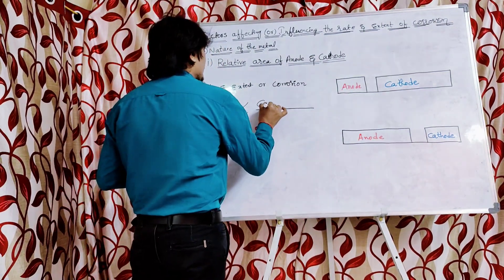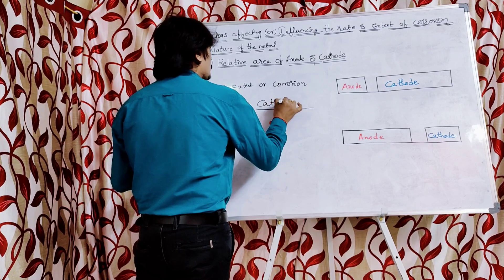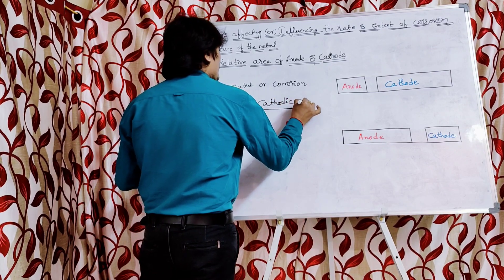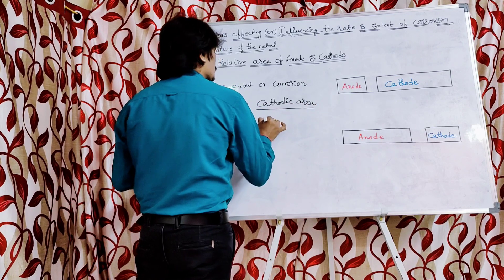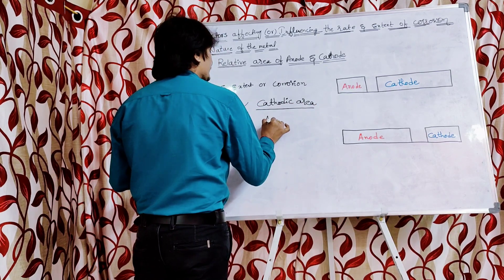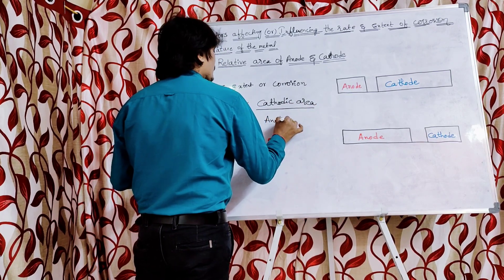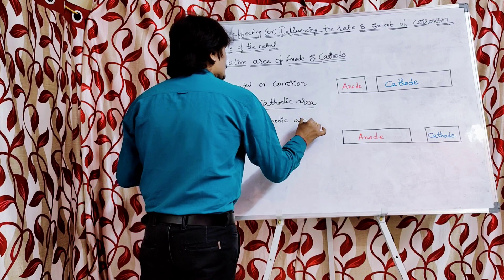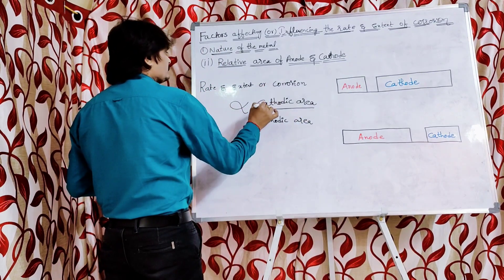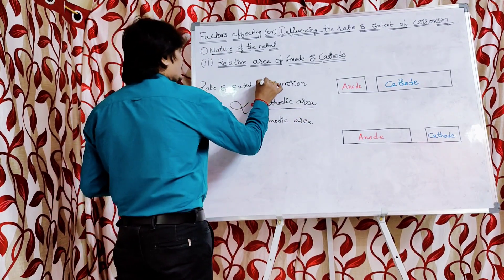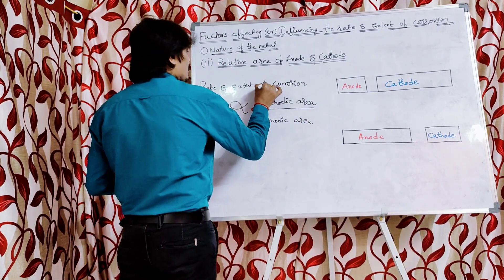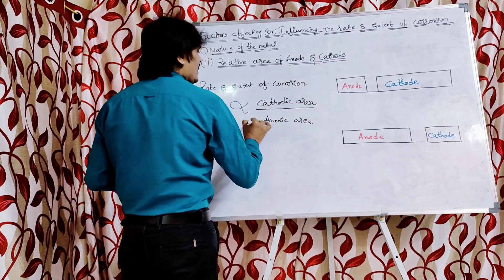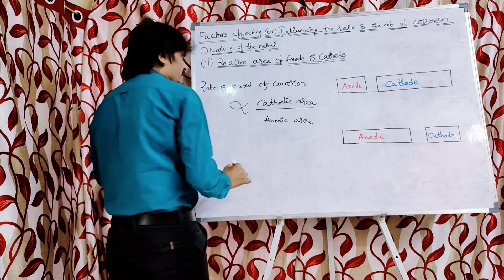So the rate and extent of corrosion is directly proportional to cathodic area and inversely proportional to anodic area.